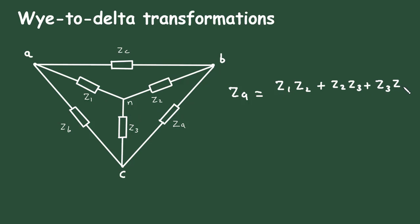Z3 into Z1 divided by, now here we have to find ZA so it will be divided by Z1. Now for ZB, it will be divided by Z2.